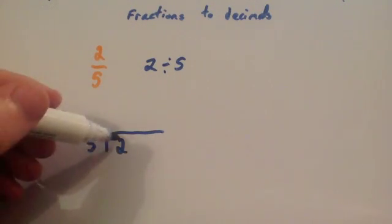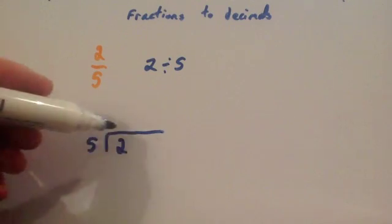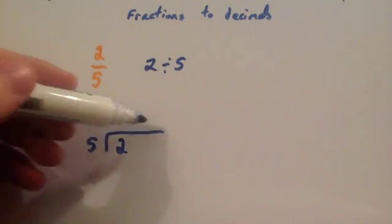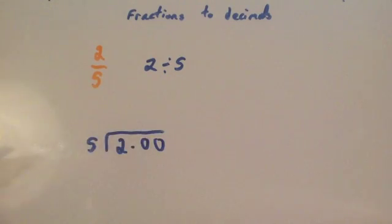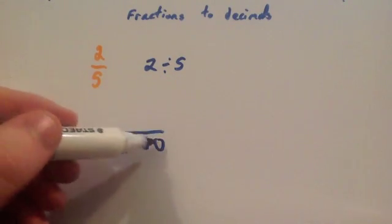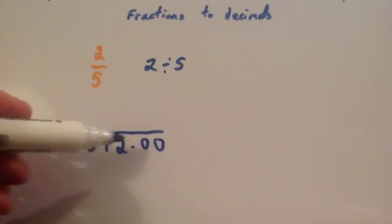So, because you know that the 5 doesn't go into 2, and you know there's going to be some remainders, obviously it's a decimal number, so it's going to be 0.something. What I'm actually going to do is I'm going to put a decimal point and a couple of zeros here. I don't know how many zeros I need. I could put loads of zeros if I needed to.